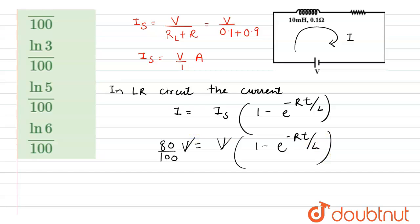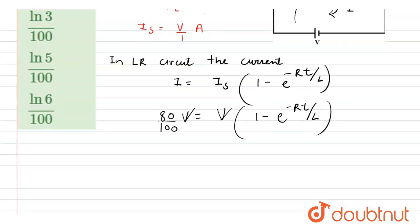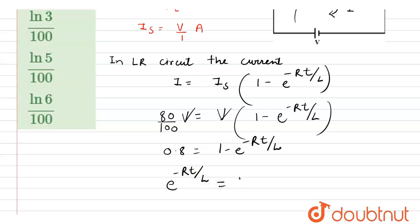By cancelling V on both sides, we get the equation: 0.8 = 1 - e^(-Rt/L). Rearranging, e^(-Rt/L) = 1 - 0.8, which gives e^(-Rt/L) = 0.2.